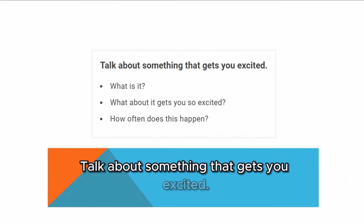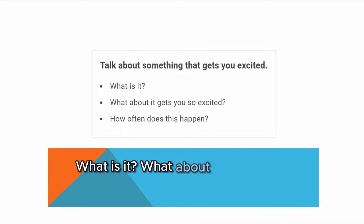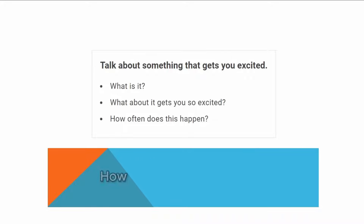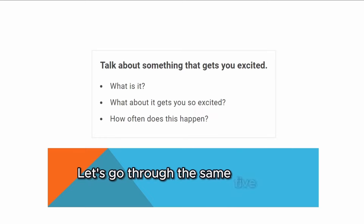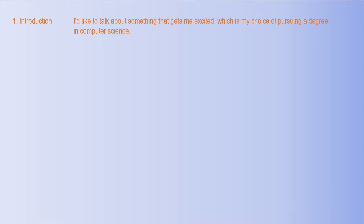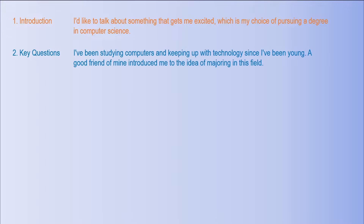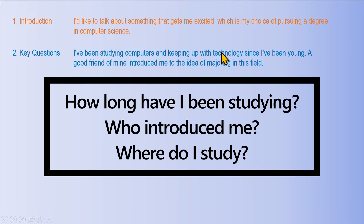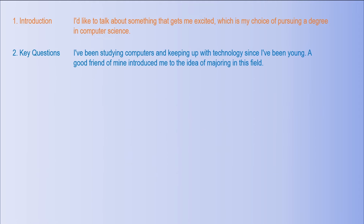The second sample question: 'Talk about something that gets you excited. What is it? What about it gets you so excited? How often does this happen?' Let's go through the same five steps. Introduction: 'I'd like to talk about something that gets me excited, which is my choice of pursuing a degree in computer science.' Key questions: I've been studying computers and keeping up with technology since I was young. A good friend of mine introduced me to the idea of majoring in this field. We want to cover: how long have I been studying, who introduced me, and where do I study.